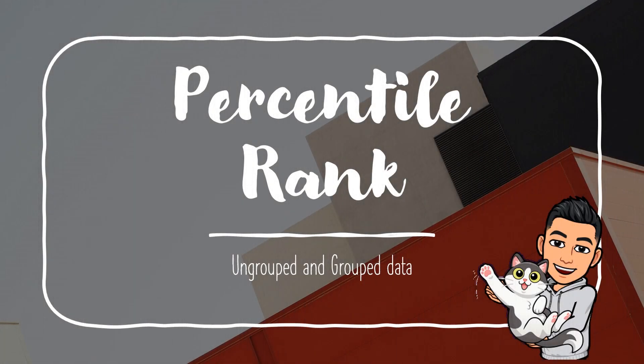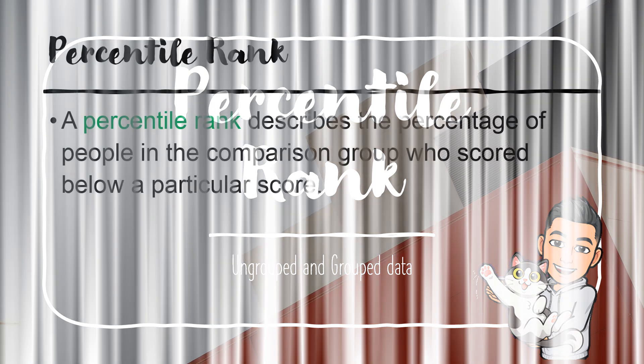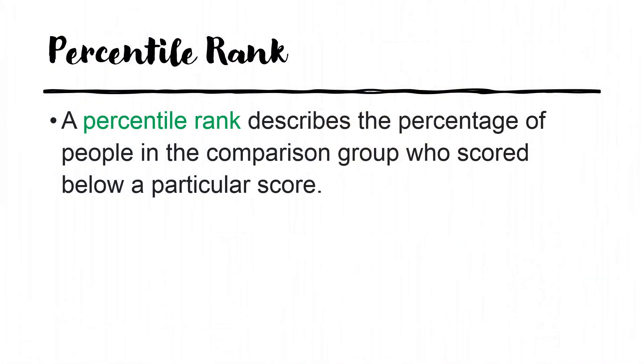Percentile rank — for ungrouped and grouped data. But first, what is percentile rank? Percentile rank describes the percentage of people in the comparison group who scored below a particular score.